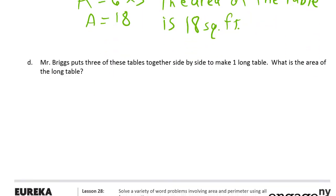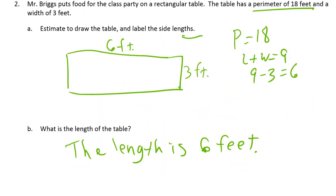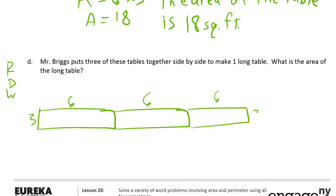Mr. Briggs puts three of these tables together side by side to make one long table. Called that banquet formation when I was a waiter. What is the area of the long table? So this is a 6 by 3. So I need—this is read, draw, and write. So this is a 6 by 3. Then I need another 6 by 3, and another 6 by 3. Now I'm not worried about these threes inside. I can have them there, but it doesn't matter.